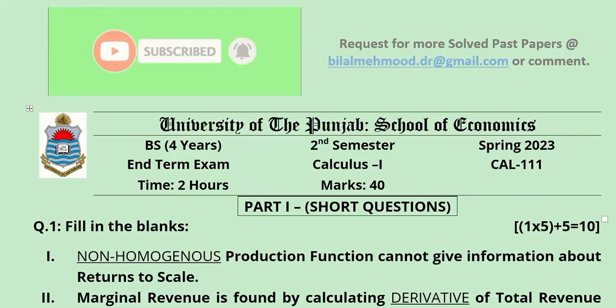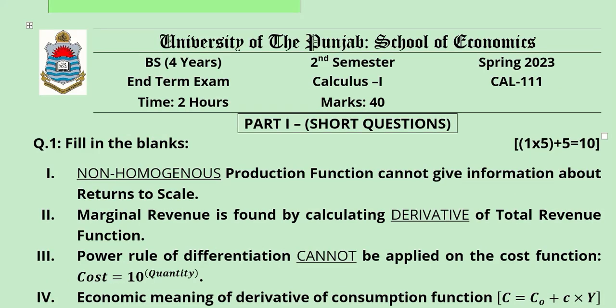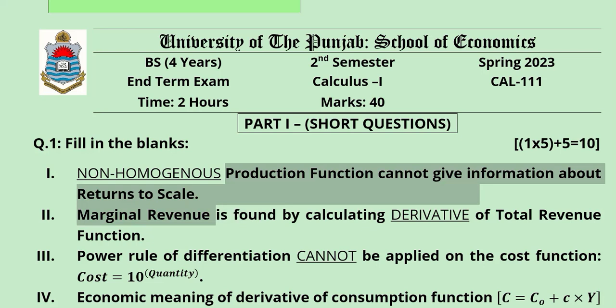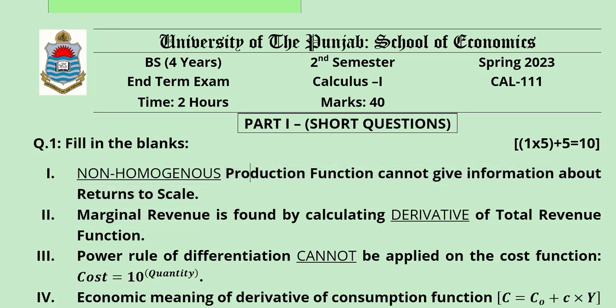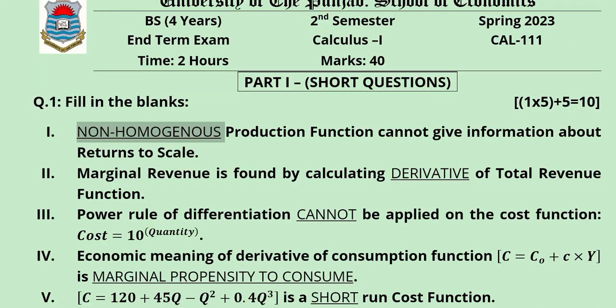Now we will see their solutions one by one. First, we come to the blanks. The first blank states that a certain type of production function cannot give information about returns to scale. The answer is non-homogeneous: a homogeneous production function can tell us about returns to scale, but a non-homogeneous production function cannot, because there is no degree of homogeneity and we cannot use the scalar method of introducing lambda.